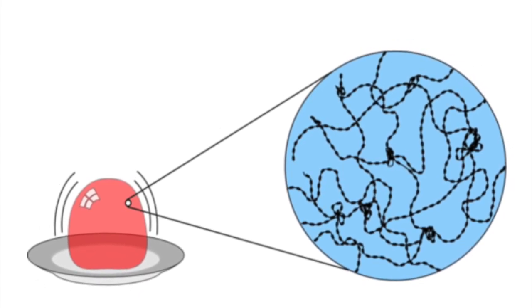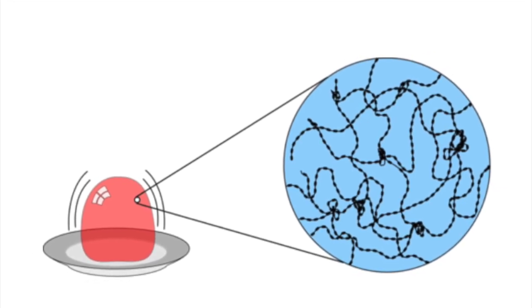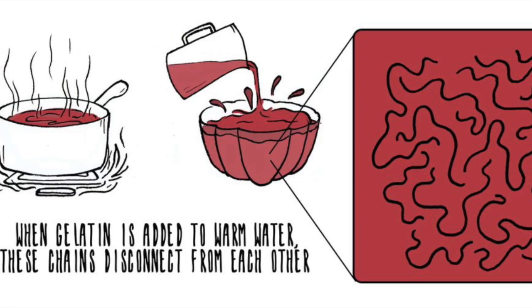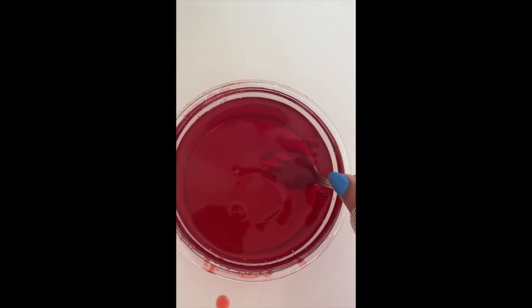If you were to heat the Jell-O, meaning that you would be heating the gelatin, the bonds between the chains would loosen, turning the Jell-O into a liquid as the chains slide away from each other.